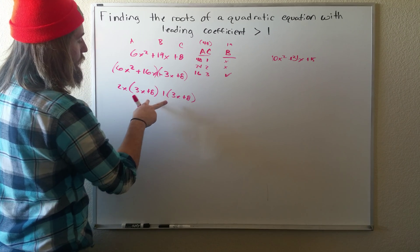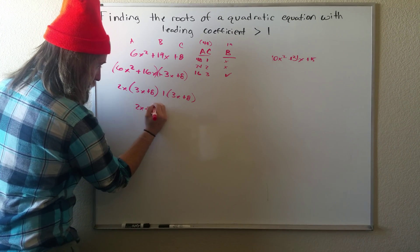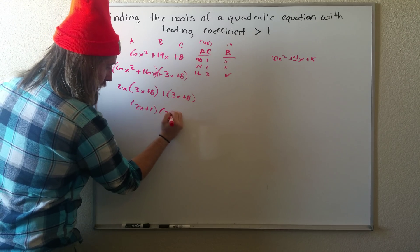Since these two are the same binomials, we can put their coefficients together. So we have 2X plus 1 times 3X plus 8.